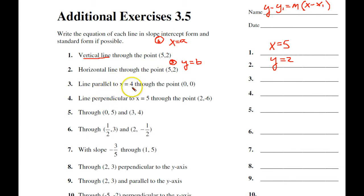How about a line that is parallel to x equals 4, and it goes through the origin? Well, if it's parallel to x equals 4, it's this formula. So this would be x equals 0. These are parallel lines going through 4, going through 0.